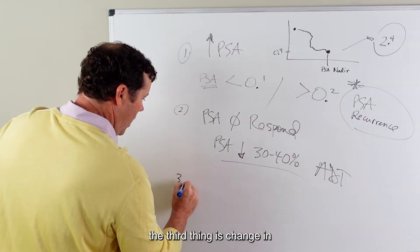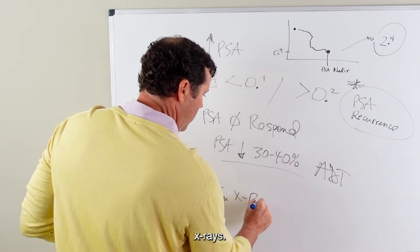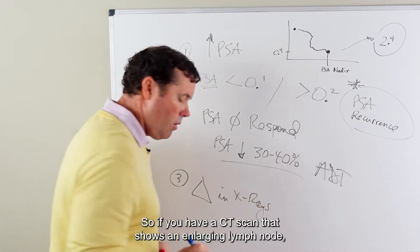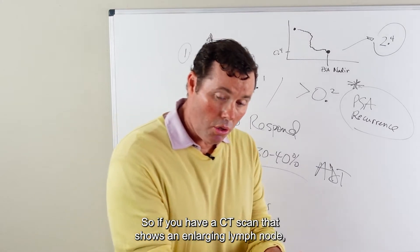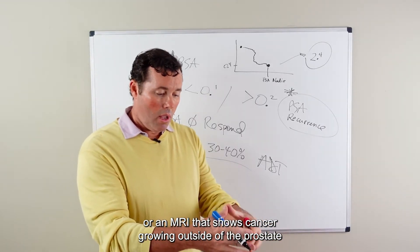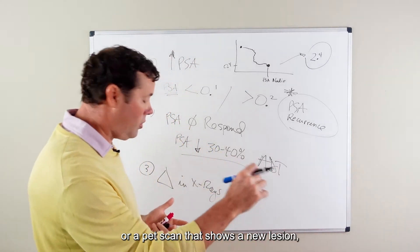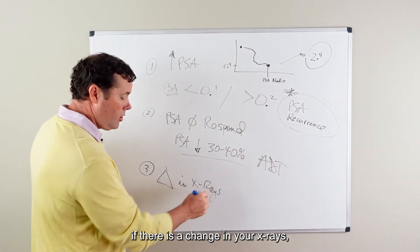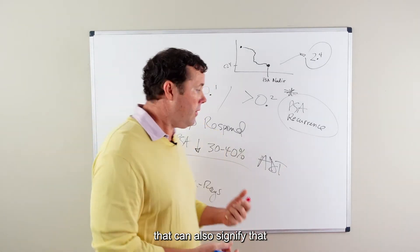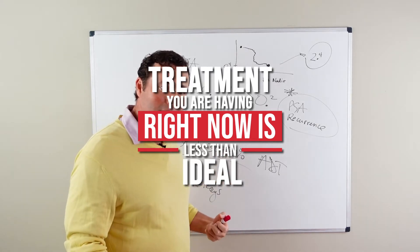Now, the third thing is change in x-rays. So if you have a CT scan that shows an enlarging lymph node or an MRI that shows cancer growing outside of the prostate or a PET scan that shows a new lesion, if there is a change in your x-rays, that can also signify that the treatment you are having right now is less than ideal.